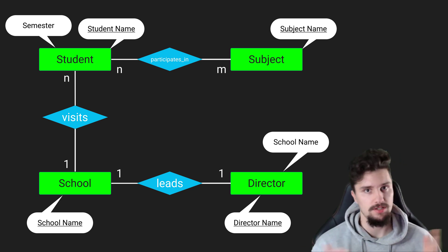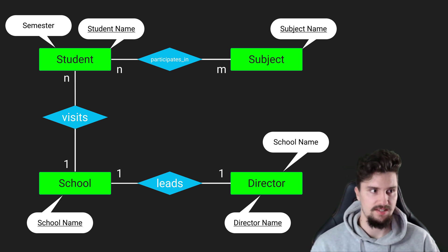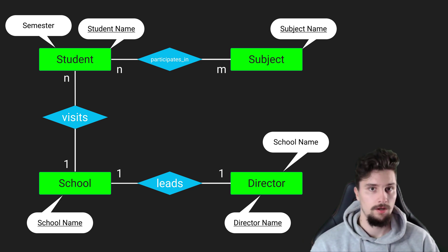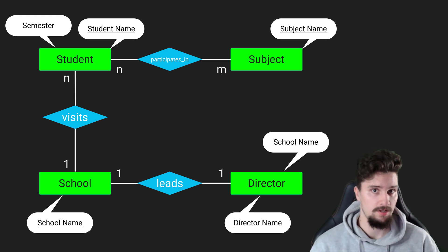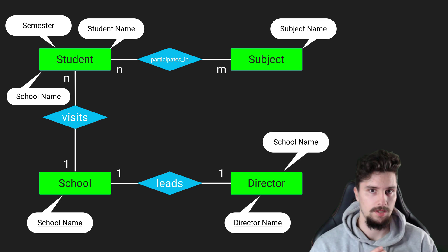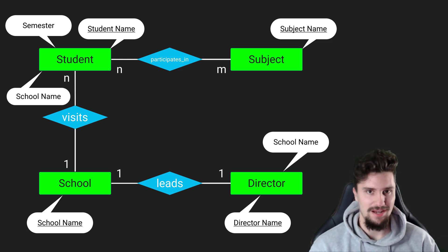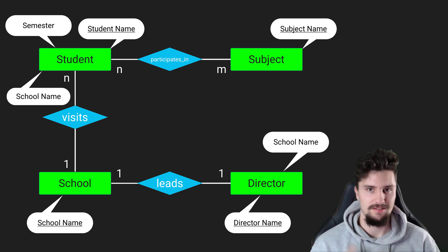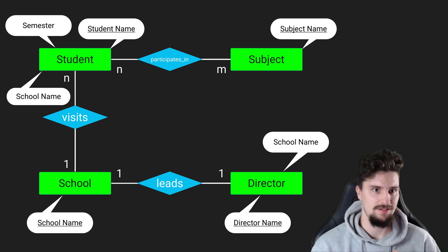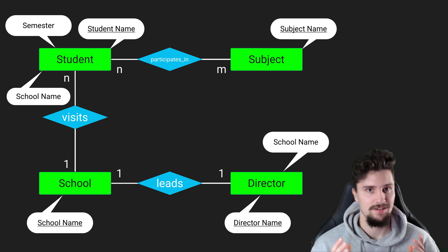For the one-to-n relationship between schools and students, we can't save the student name in the school table because a school can have multiple students. Instead, we save the school name in the student table, because each student only belongs to one school. The other way around doesn't work — we can't save the student name in the school table.